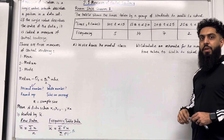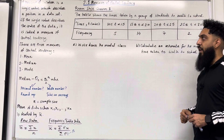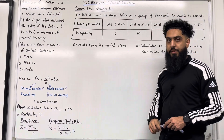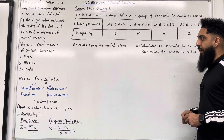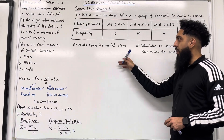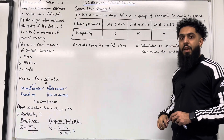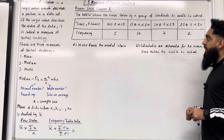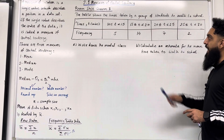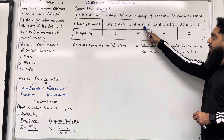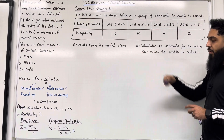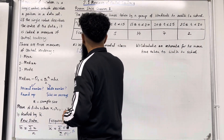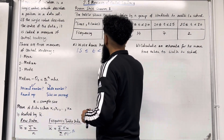Over here we have grouped data, which is continuous, and time is continuous. For part A, we want to write down the modal class — that is, the class interval with the highest frequency. The class interval with the highest frequency has a frequency of 14, so the answer for part A is 15 ≤ T < 20.